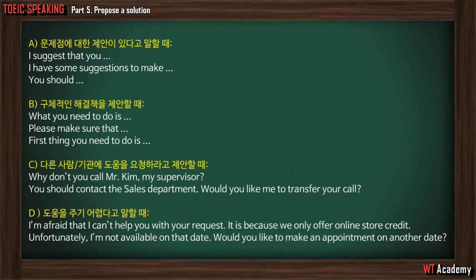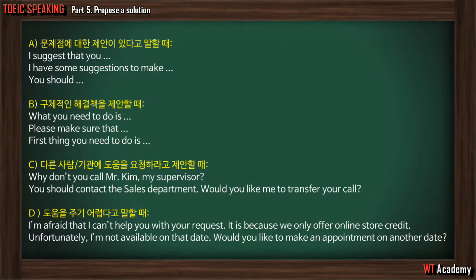Category B is a guaranteed solution — it is an answer, a must-do, not a suggestion. Examples: 'What you need to do is this, then this, then this' — very structured, you're not saying try this, you're saying do this. 'Please make sure that this is done, then this, then this' — very important steps. 'The first thing you need to do before anything else is this, then you have to do this.' These are very specific instructions.